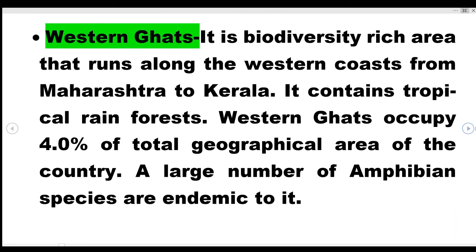The Western Ghats is a biodiversity-rich area that runs along the western coast from Maharashtra to Kerala. Tropical rainforests are found here. The Western Ghats occupy 4% of the total geographical area of the country. A large number of amphibian species are endemic to this region, meaning they are exclusively found here.